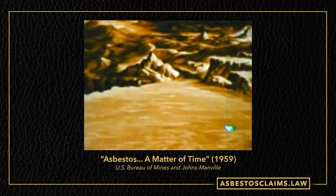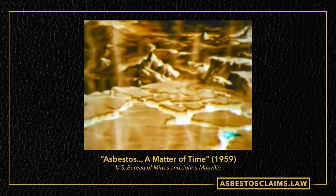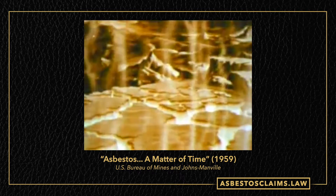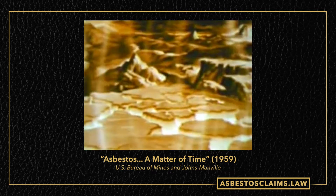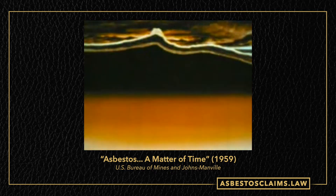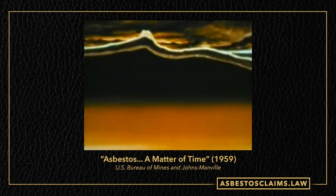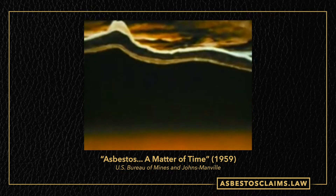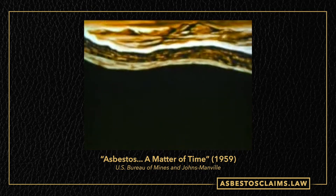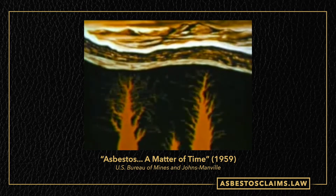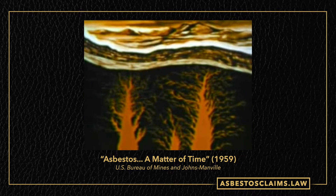Here is how an old film from the US Bureau of Mines and Johns Manville explains the creation of asbestos. Beneath the earth's constantly changing crust, molten rock flowed and burned under tremendous heat and pressure, striving to find release. The crust was torn by subterranean upheaval, and molten rock spewed upward.